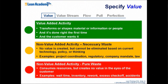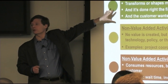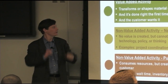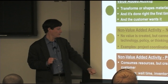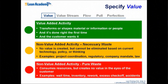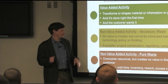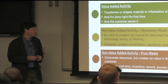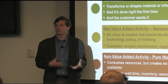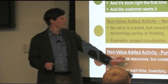There are some guides here. We can think about value as things that directly transform material or information in the direction of the customer's desire, and done correctly — no mistakes. That's unambiguously valuable. The other end is also easy to think about: pure waste. Consumes resources but creates no value — waiting, inventory, mistakes, reworking things because you're fixing a mistake. And then in the middle, there may be things that we know don't really add value but we simply have to do — setup and teardown, project coordination, satisfying regulations.